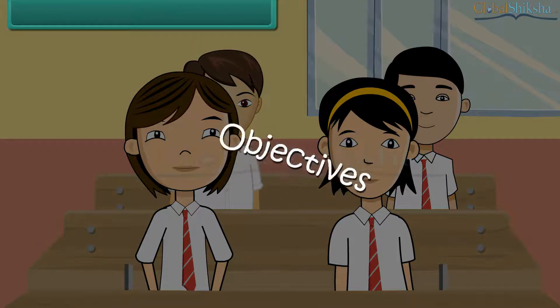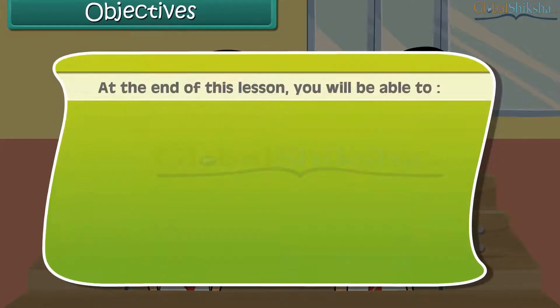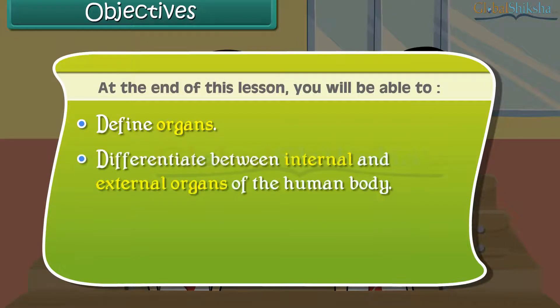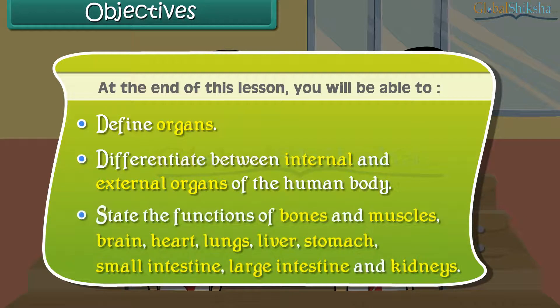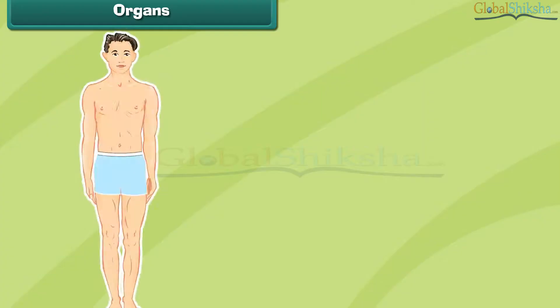Objectives: At the end of this lesson you will be able to define organs, differentiate between internal and external organs of the human body, and state the functions of bones and muscles, brain, heart, lungs, liver, stomach, small intestine, large intestine, and kidneys.